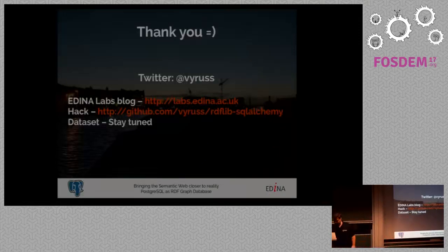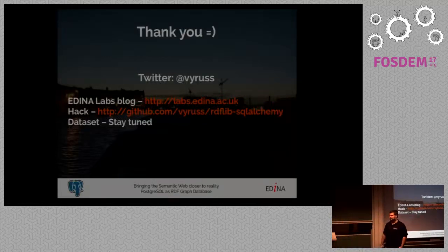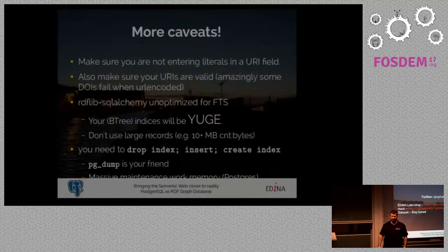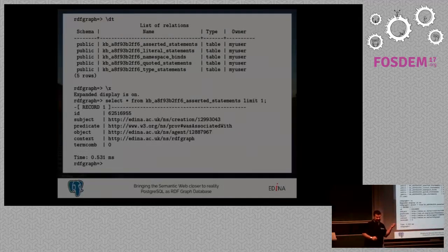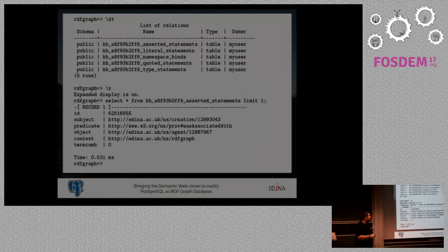Thanks Jimmy — we have time for questions, please wait for the microphone. Question: What kind of schema does Postgres use to store the triples underneath all these layers for RDF? I didn't choose it — it's what RDFlib-SQLAlchemy creates. It creates very simple tables with subject, predicate, object and fills them with all the triples — only five tables, two of which are the really large ones: one containing URIs and one containing strings.